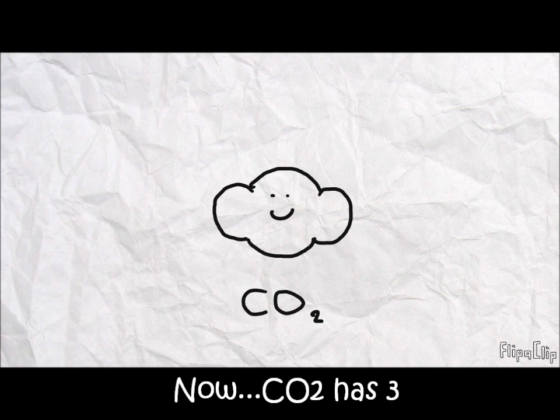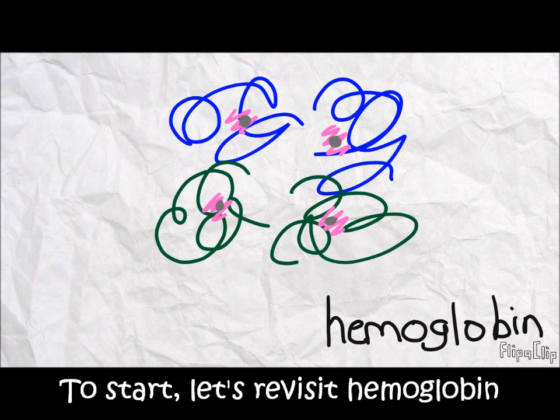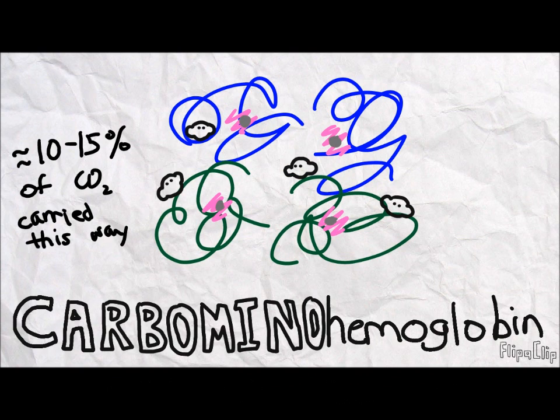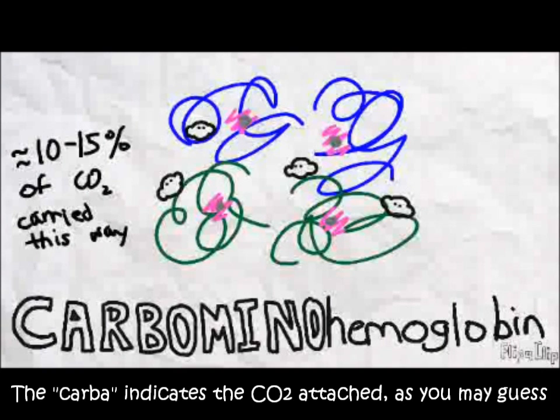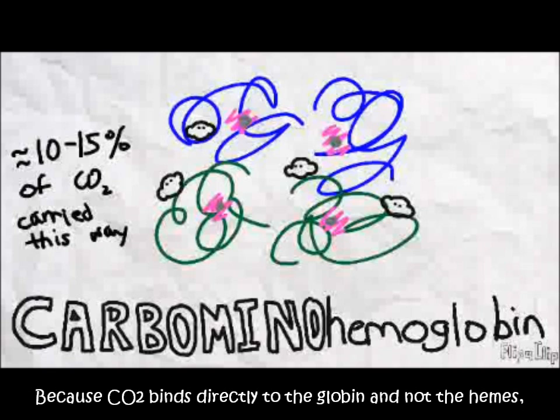Now, carbon dioxide has three methods. To start, let's revisit hemoglobin. But this time, it's carbaminohemoglobin. So, 10 to 15% of carbon dioxide is carried this way. The carba indicates that carbon dioxide is attached, as you may guess, and the amino refers to the amino acid on the hemoglobin that carbon dioxide binds to.